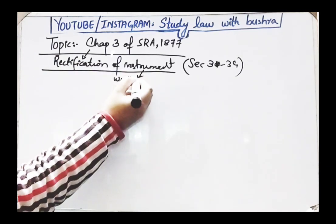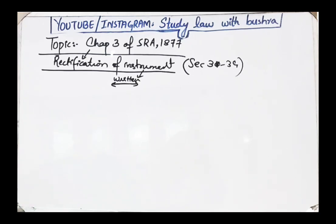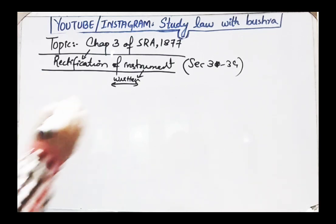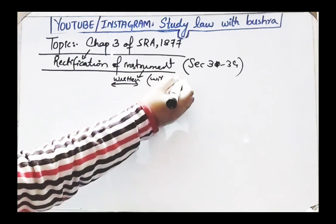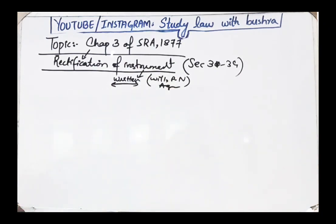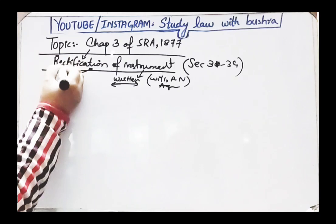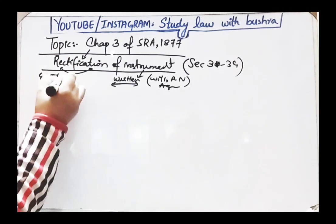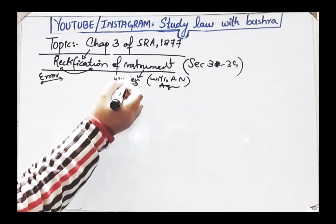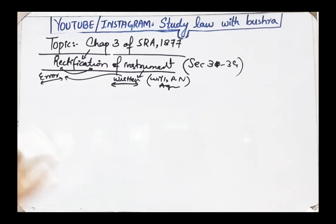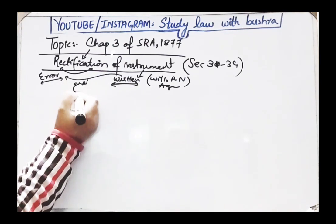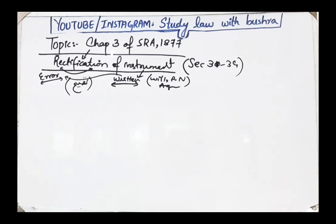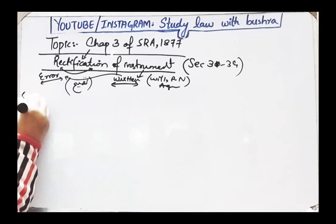An instrument, as I explained in the intro lecture in detail, is basically a legal document that conveys the rights of the parties from one to another. When parties make a contract and bring it into written form — any agreement, any will, any promissory note — that is an instrument. Rectification means that if any kind of error or mistake has occurred in that written legal document, a suit for rectification of instrument is filed to correct it.